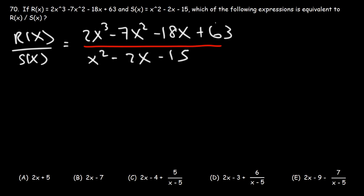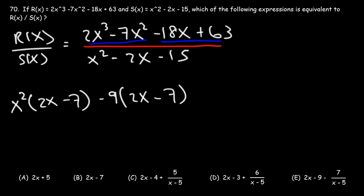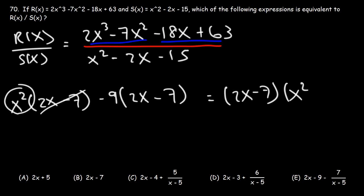Let's begin by factoring the numerator. It looks like we can factor by grouping — negative 7 divided by 2 is the same ratio as 63 divided by negative 18. Take out the GCF in the first two terms, which is x squared: 2x cubed divided by x squared is 2x, and negative 7x squared divided by x squared is negative 7. For the last two terms, take out negative 9: negative 18x divided by negative 9 is 2x, and 63 divided by negative 9 is negative 7.